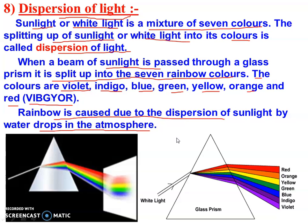The rainbow is an application of dispersion of light. White light is made of seven colors. When white light passes through a prism, it splits into its seven component colors, forming a spectrum. This phenomenon is known as dispersion of light. The arrangement of colors is in the sequence violet, indigo, blue, green, yellow, orange, red. Violet has the highest energy and red has the least energy — this is the sequence in decreasing order of energy. Thank you very much.